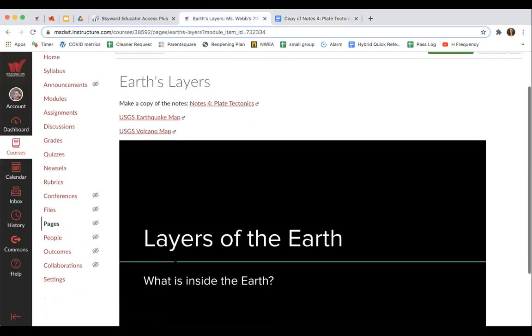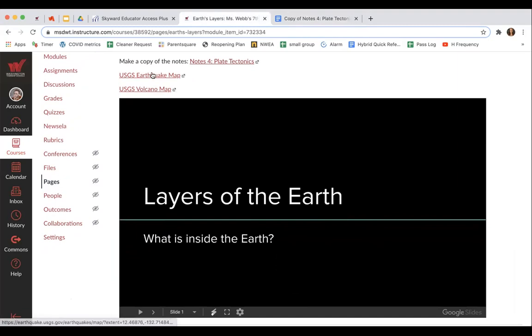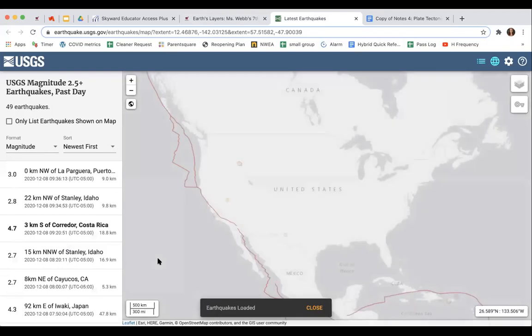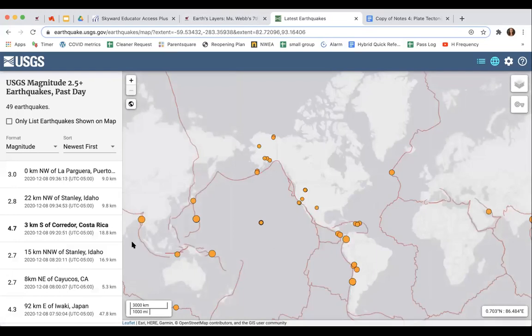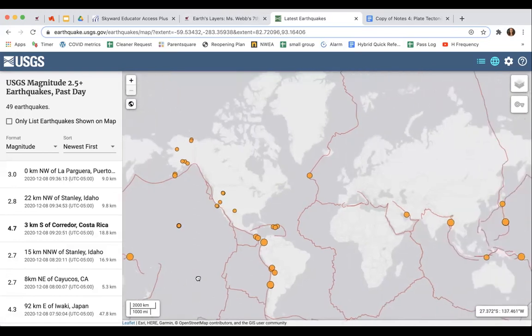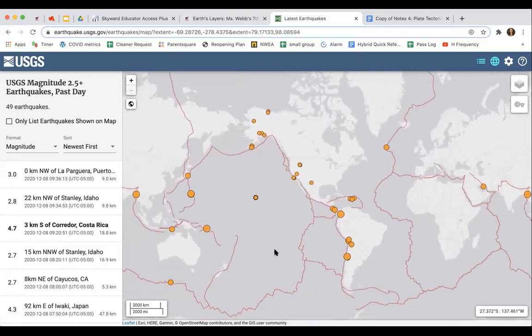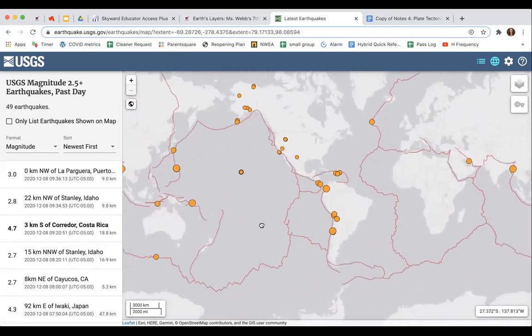I included a link to an earthquake map which is pretty cool. It shows all of the earthquakes in the world that have happened so far today. All these dots are earthquakes that have been felt in the last 24 hours. Some of these are too small to be felt. The smaller the dot, the weaker the earthquake was. The larger the dot, the stronger it was.